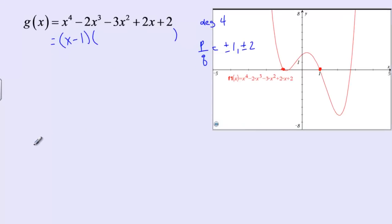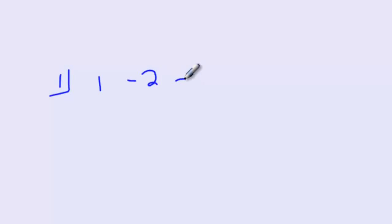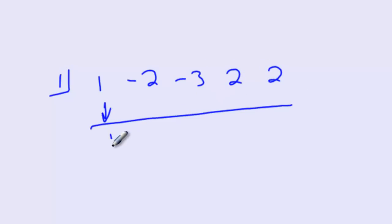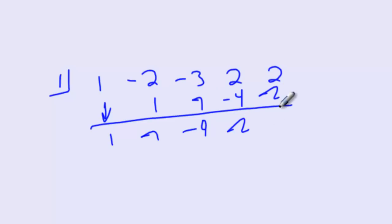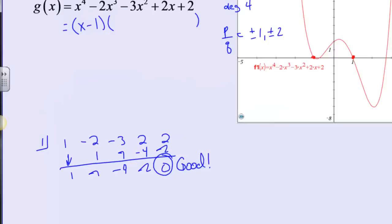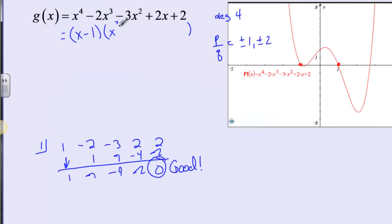Let's do synthetic division with 1 in the bracket. Coefficients: 1, negative 2, negative 3, 2, and 2. Skip a line, draw a line, bring down the 1. 1 times 1 is 1, giving negative 1; then negative 1, negative 4, negative 4, negative 2, negative 2, and 0. That means x³ - x² - 4x - 2 is the remaining polynomial.